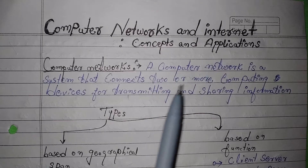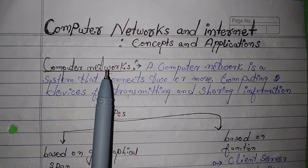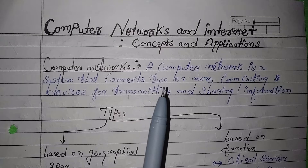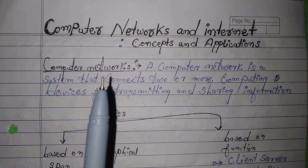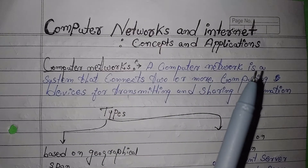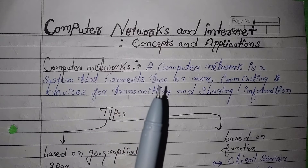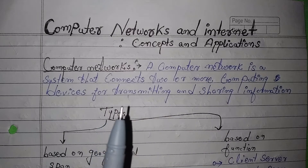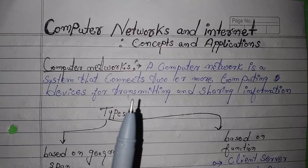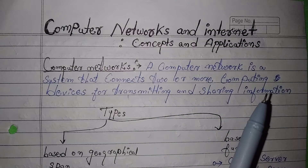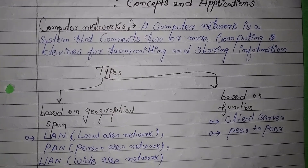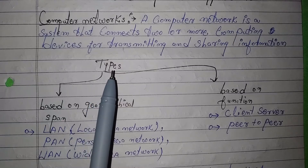In this first topic we have to learn about Computer Networks. A computer network is a system that connects two or more computing devices for transmitting and sharing information.